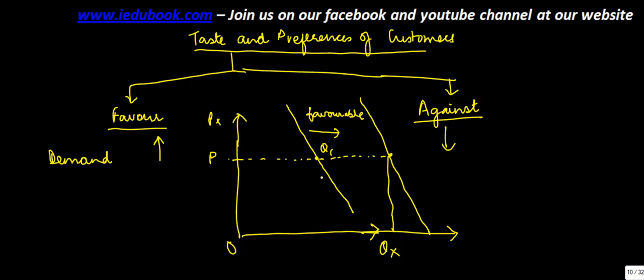Whereas if there is a change against the good—let's say this is Q3, this is Q2, and let me plot some numbers here—the quantity demanded will be lower, with price remaining the same.